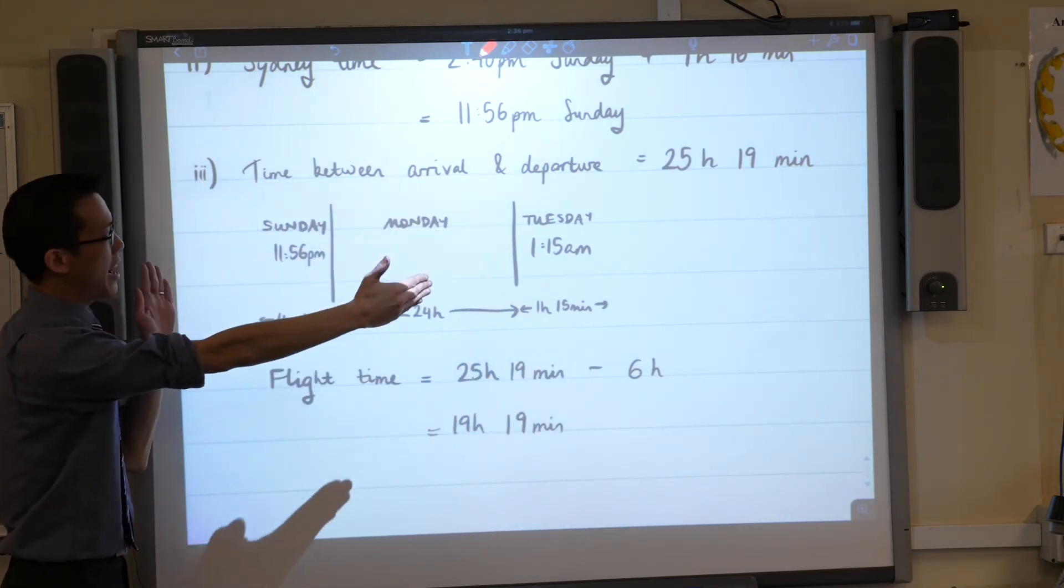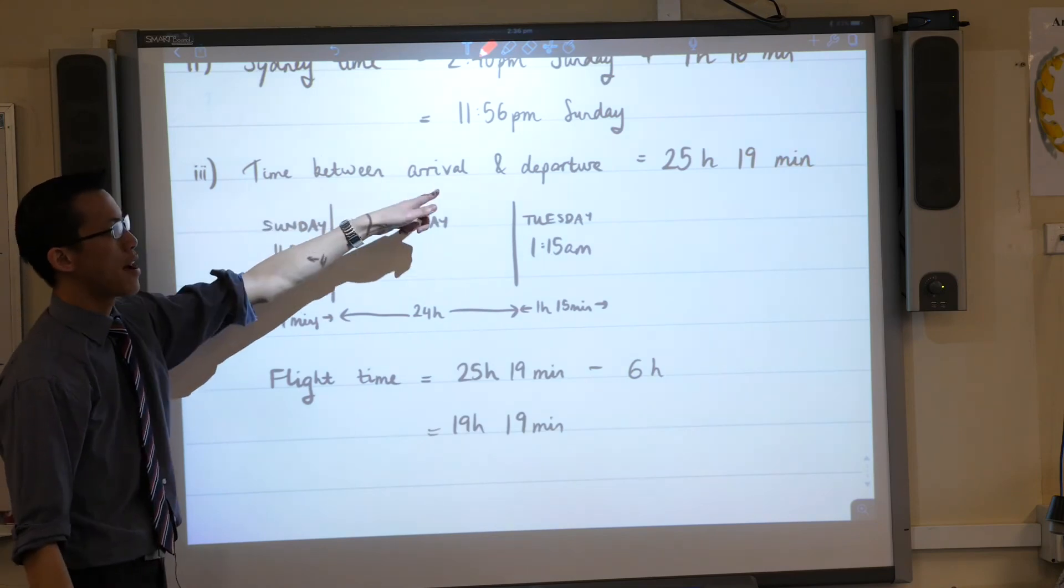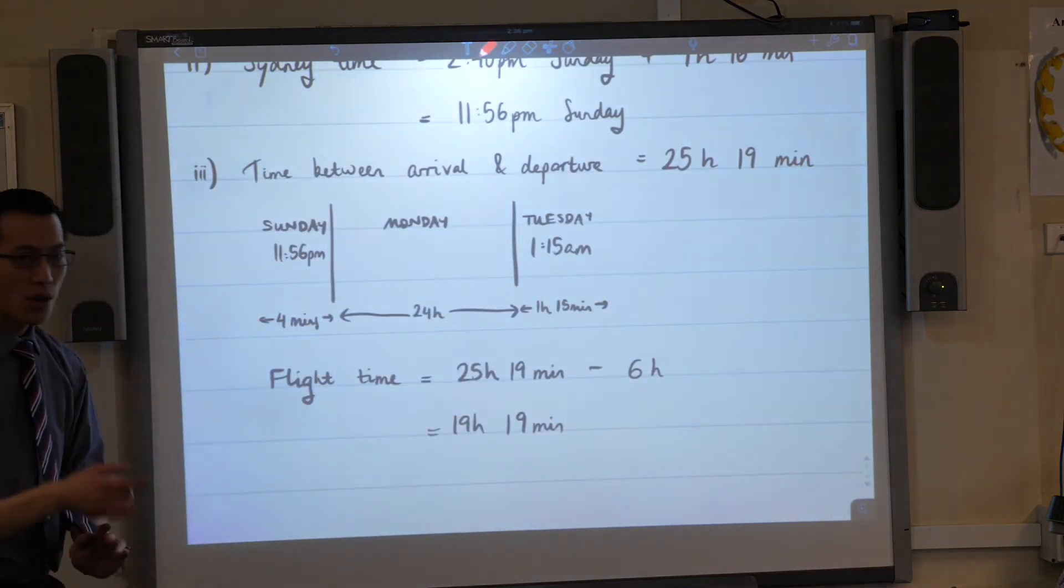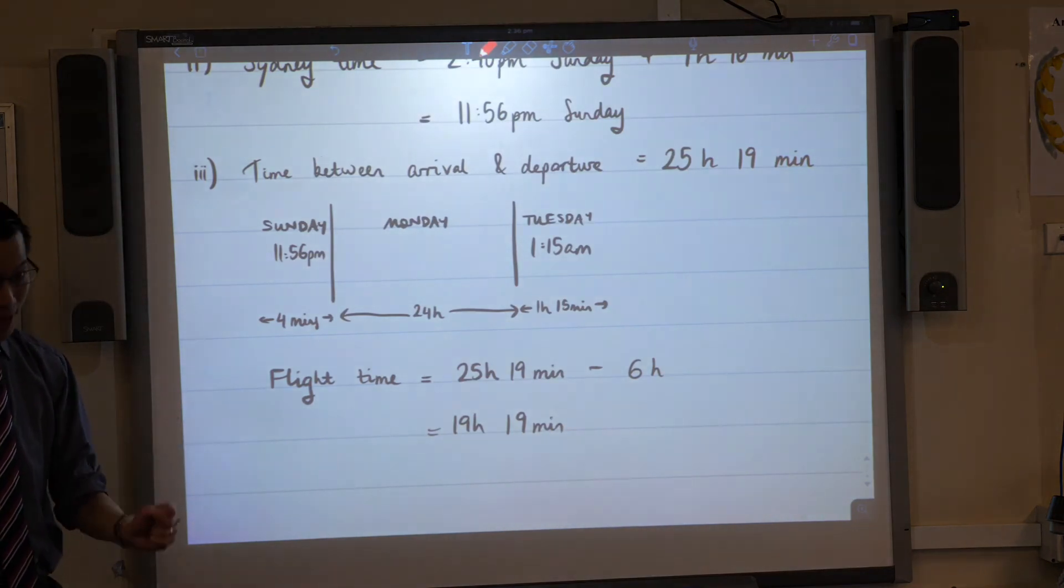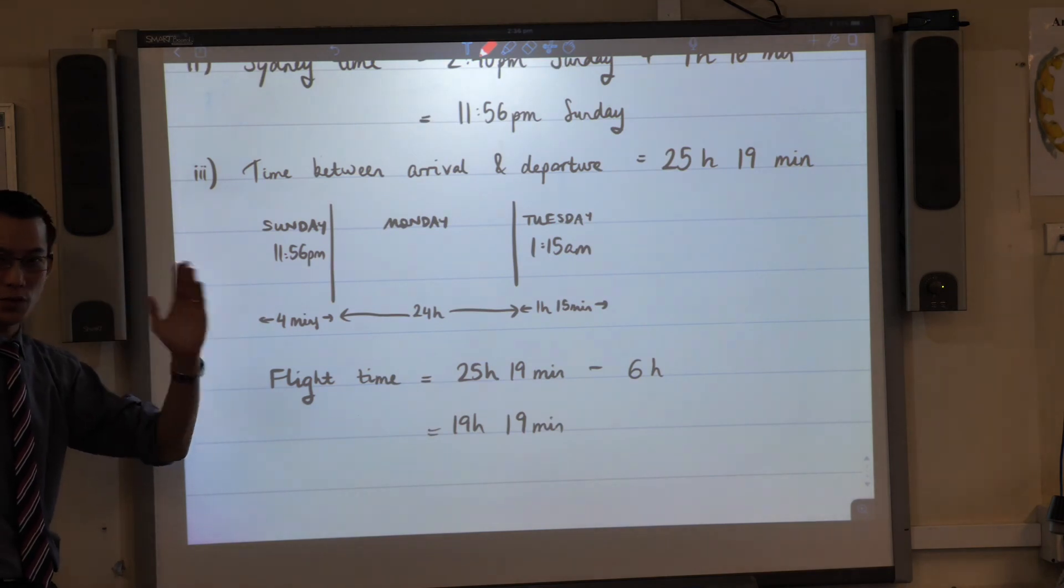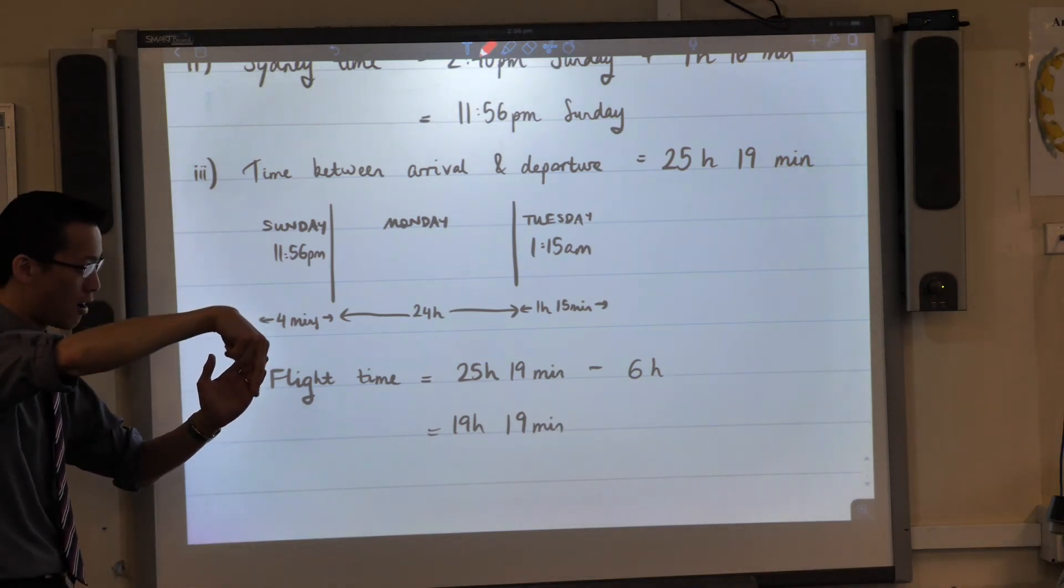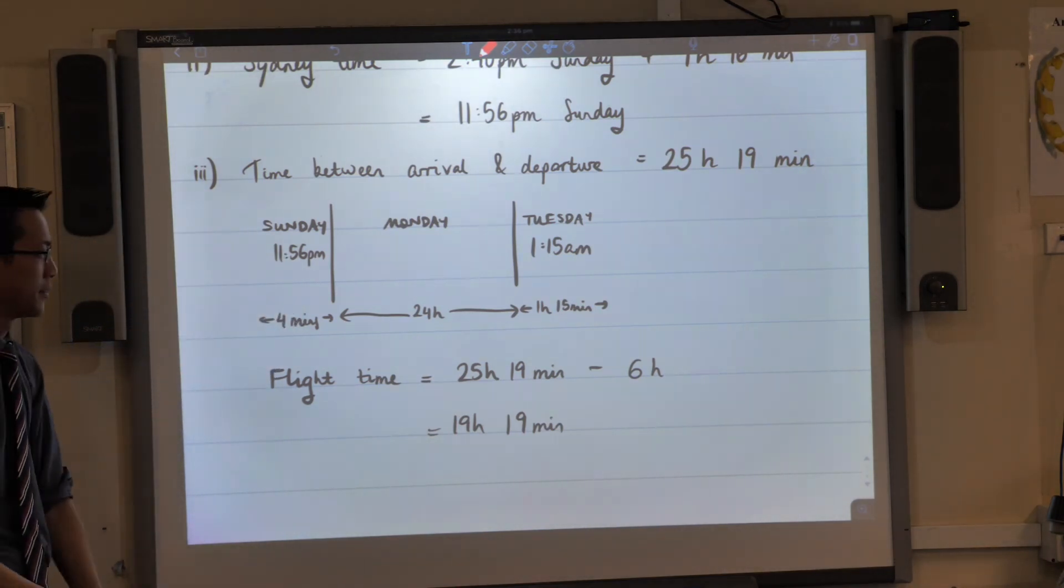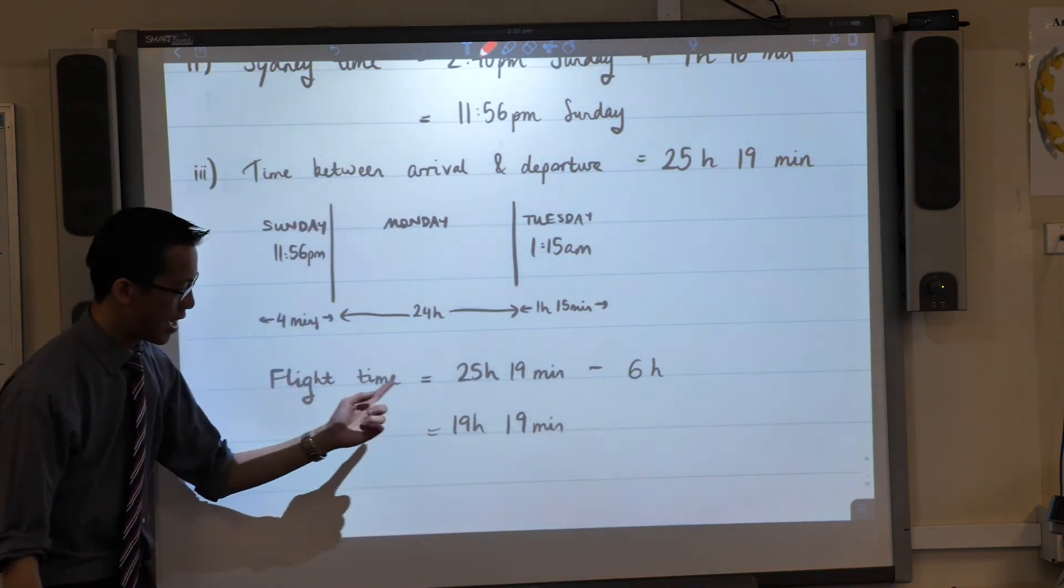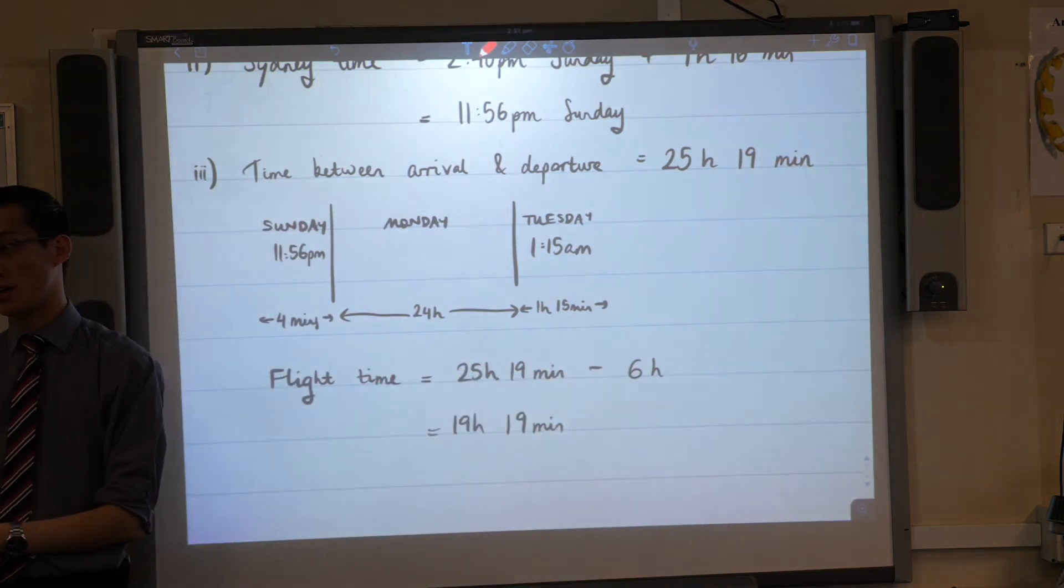So if you take all of that, the time between arrival and departure is that. That's the sum. But they've asked for flight time, not just the difference between walking onto the plane and off the final plane. So therefore, I've subtracted the six hours that were included in that layover, and that's what gives you your final answer.